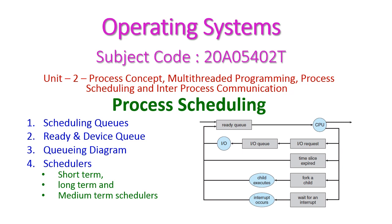Hello friends, welcome to today's operating system class. In this class we will see another important topic from the second unit: process scheduling. Under this class we will discuss the scheduling queues, the two types of scheduling queues — ready queue and device queue — and then the queuing diagram. After that we will discuss the three types of schedulers: short term, long term, and medium term schedulers.